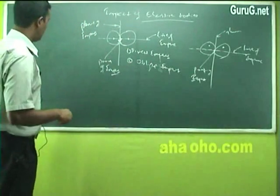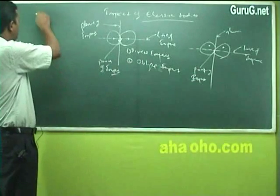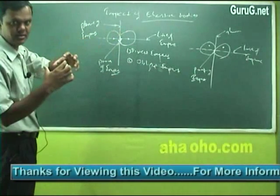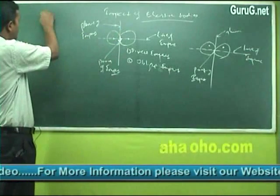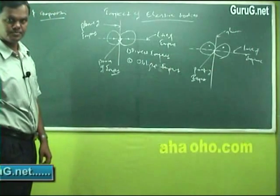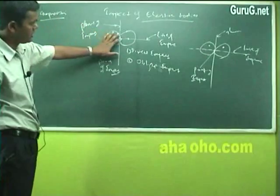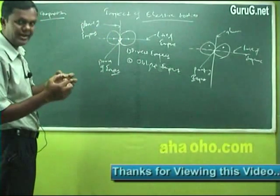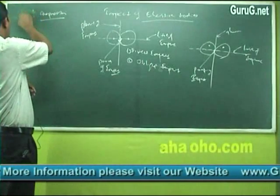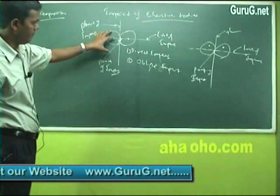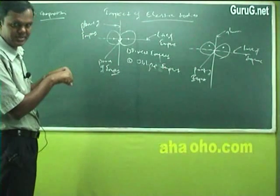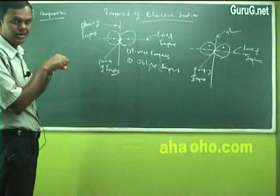When the two bodies are in impact or contact, what will happen due to the hitting — you will have compression. Compression means when the two bodies are hitting or get impacted, the body gets compressed. The time taken for that compression is called time of compression. When the bodies come into contact, that particular time the body gets compressed, and the time taken for that is called time of compression.